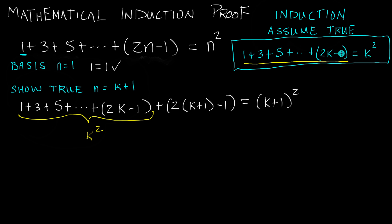Since this sum equals k squared according to our assumption, we can just replace all of it with k squared. So then we just need to add that to 2 times k plus 1 minus 1, and see if that equals k plus 1 squared.